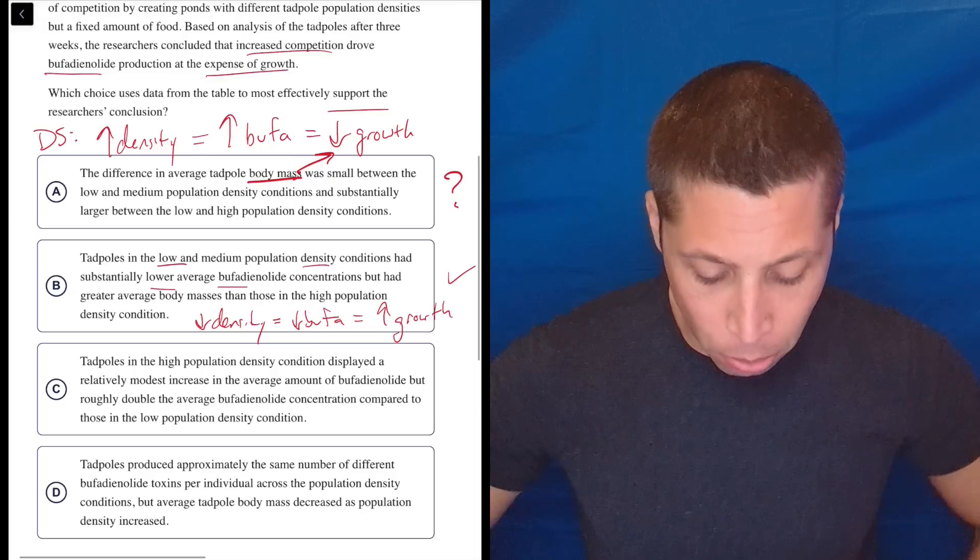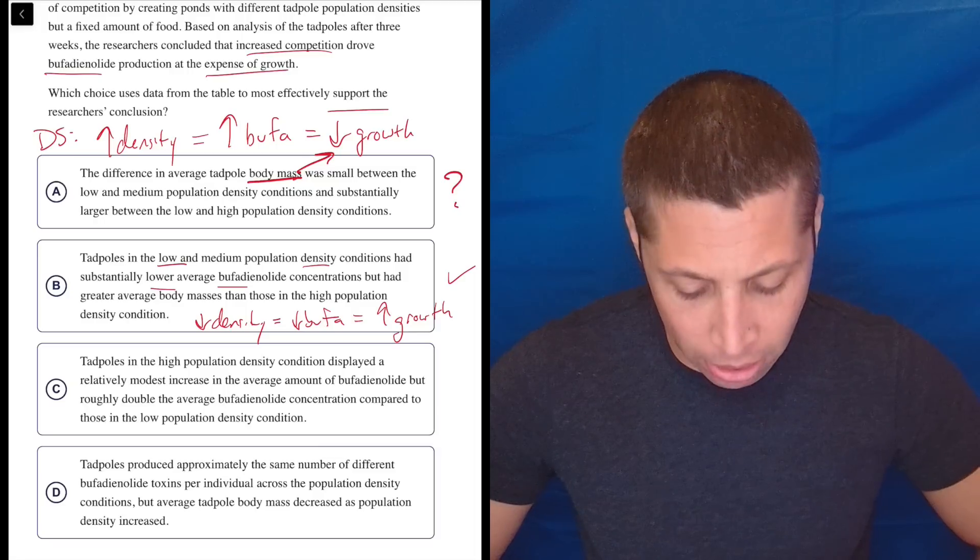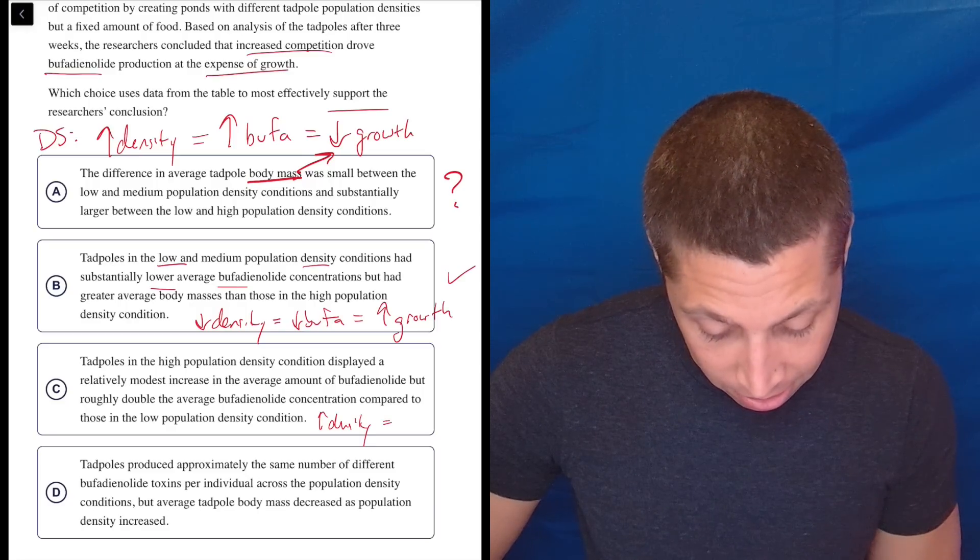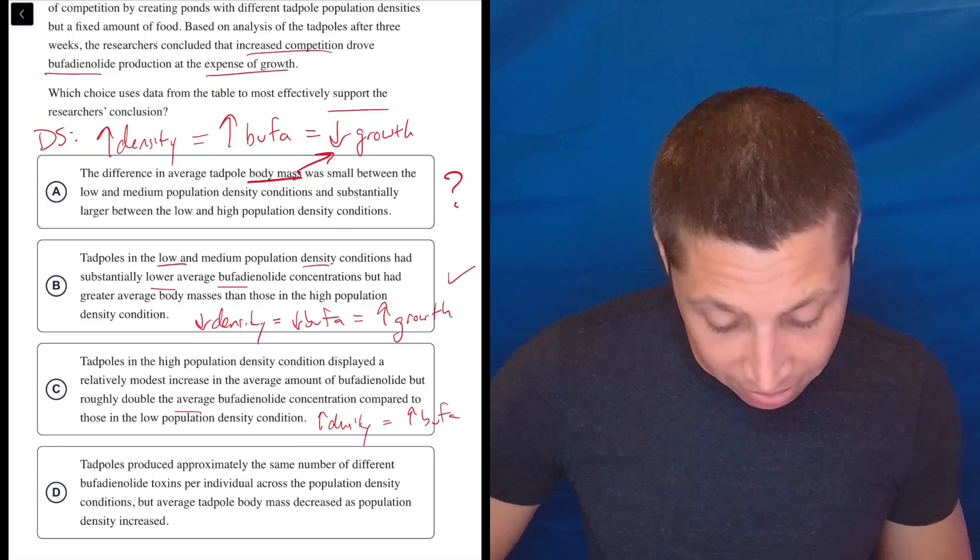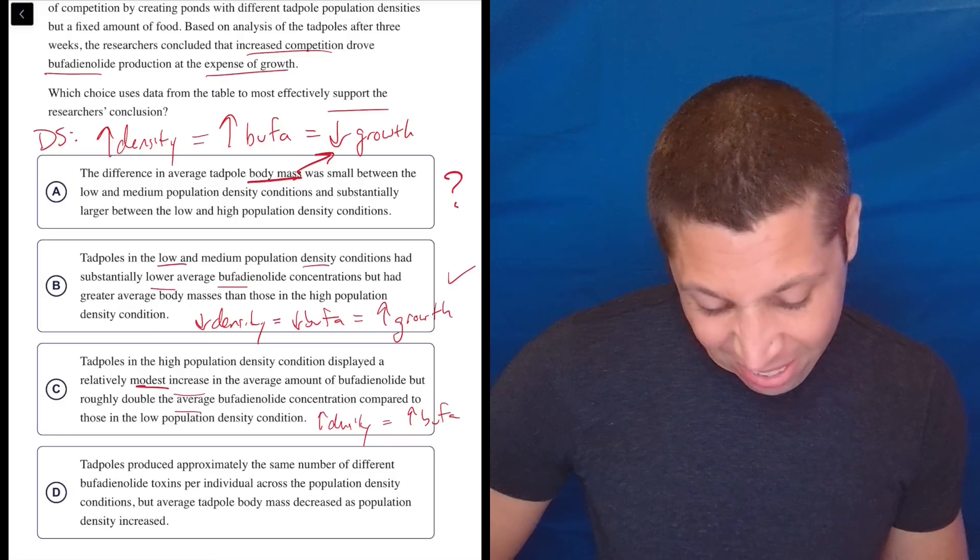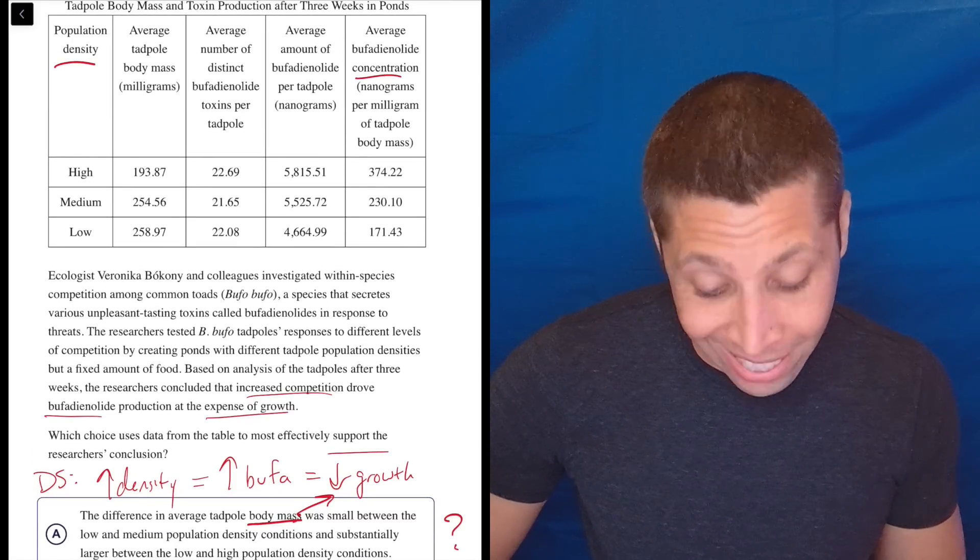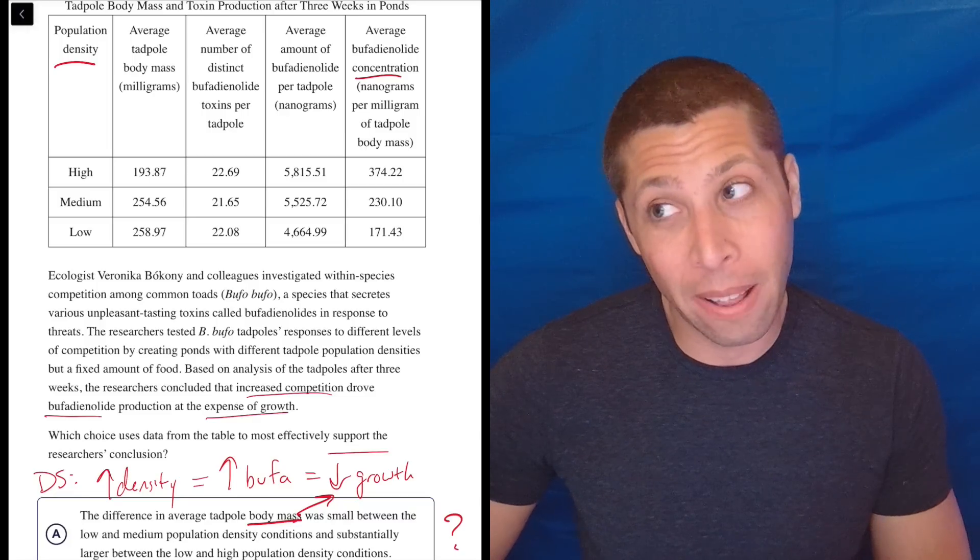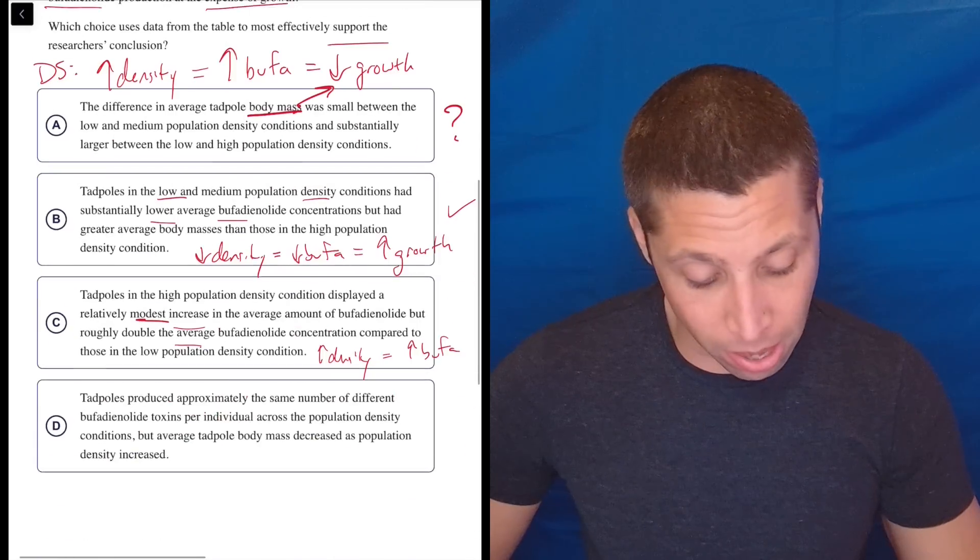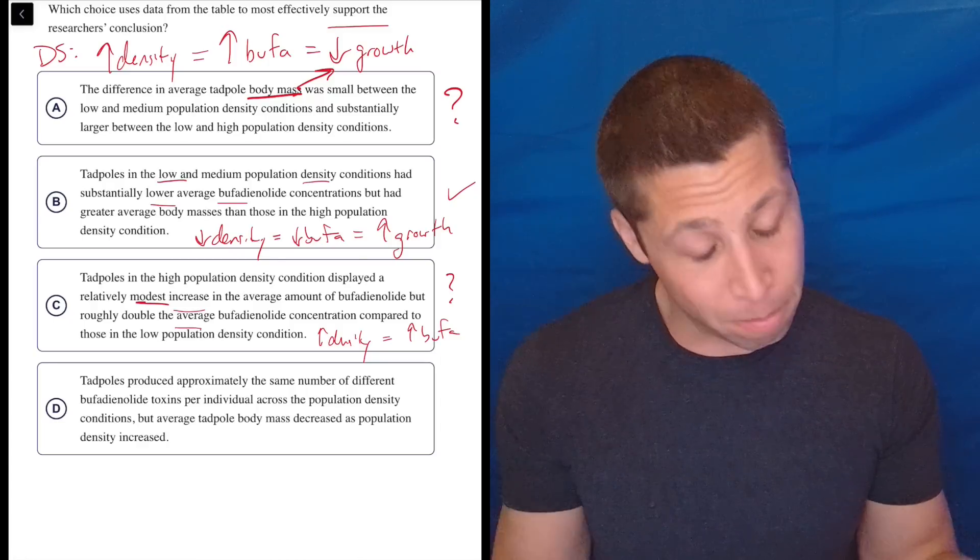But I'm not even checking whether it's true or not. Let's look at C and D and see what we have. Tadpoles in the high population density condition displayed a relatively modest increase in the average amount of bufa, but roughly double the average bufa concentration compared to those in the low population density condition. So high density has double the average bufa, so high bufa. So that seems to be the same thing. Relatively modest increase in the average amount of bufa. Well, increase, is that the same thing as having a concentration, right? So what does this even mean, right? So average bufa concentration, I don't see increase, right? They're not—we're not getting like a baseline bufa amount, and then it's changing based on that. We're just getting the bufa amount. So I don't know what the baseline is. So this choice is kind of like A. It's using a lot of the same words, but they're strung together in a way that doesn't make as much sense to me. So B is still the frontrunner.